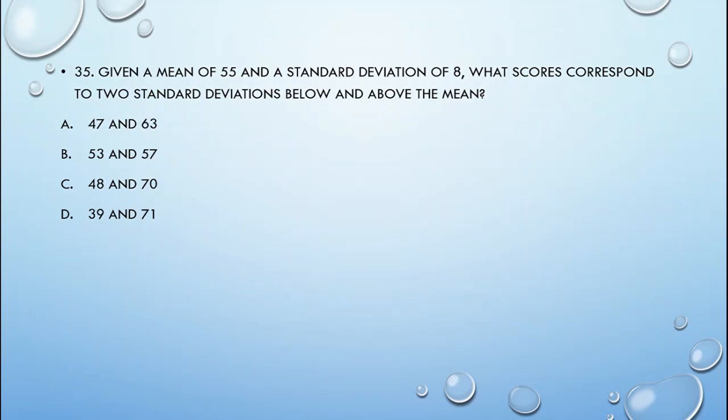Number 35. Given a mean of 55 and a standard deviation of 8, what scores correspond to 2 standard deviations below and above the mean? The answer is 39 and 71. Again, we have to use the z-score. The z-score is equal to the mean plus or minus n standard deviations. Given the mean of 55 and the standard deviation of 8, to get the z-score of 2 standard deviations above the mean, you have to add 2 times 8 plus 55 gives you 71. To get the z-score 2 standard deviations below the mean, you have to subtract 16 from 55 to give you 39. Therefore, the answer is letter D.